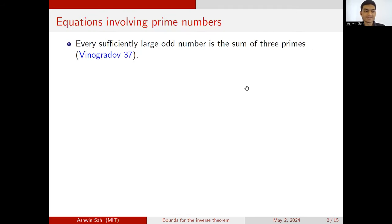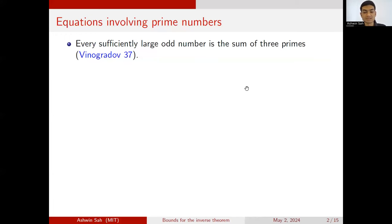Usually when I talk about the inverse theorem or additive combinatorics, I'll often start with a discussion of Szemerédi's theorem. Here I'll take a different tack and talk specifically about related types of notions, but really regarding patterns of prime numbers specifically, rather than generic sets of numbers as we study in additive combinatorics. One classical study is looking at equations involving prime numbers — twin primes, Goldbach's conjecture — looking for patterns among prime numbers. One of the most classical results in this vein is Vinogradov's result showing that every sufficiently large odd number is the sum of three primes, the weak Goldbach conjecture, using standard circle method techniques and Vinogradov's estimate, which computes the Fourier coefficients of the von Mangoldt function and establishes cancellation for it.